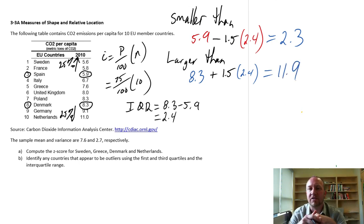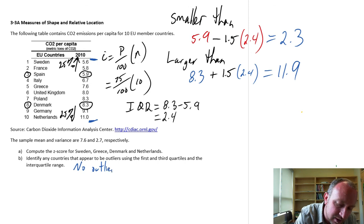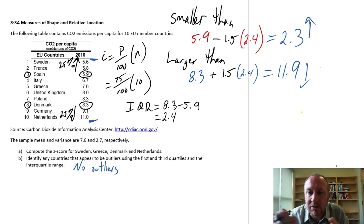So if we have an observation that is smaller than 2.3, then that would be particularly small given the nature of this data set. Something less than 2.3 would be considered an outlier, or something larger than 11.9 also would be considered an outlier in the sense that it seems to be significantly larger than anything else. So going back to our data, our smallest is 5.6, our largest is 11.9. So it looks like we have no outliers in this data set. We have no observations smaller than 2.3 and none that are larger than 11.9.